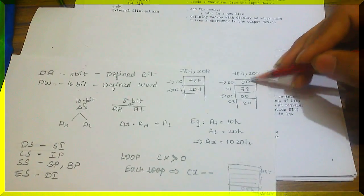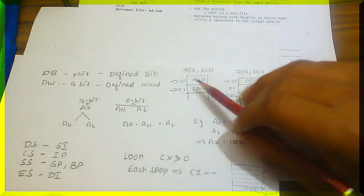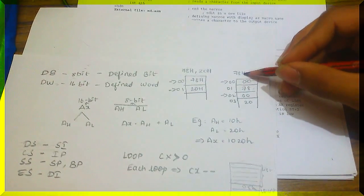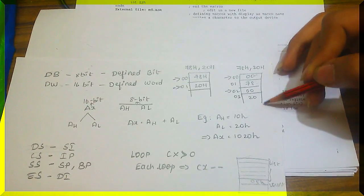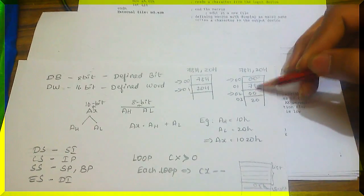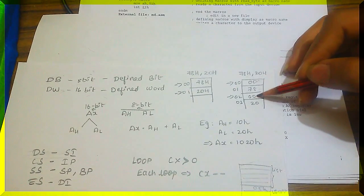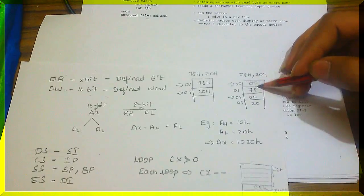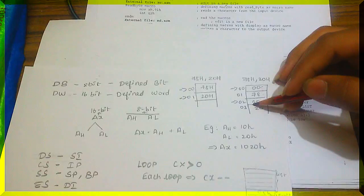Since each location contains only 8 bits, we need two locations to store a Defined Word. So to store 78H we store it as 0078, and for 20H we store it as 0020. Therefore every new value will be placed at every second location — the first location is 00 and the next value is stored at offset 02.